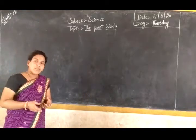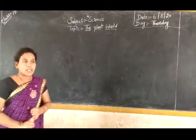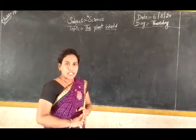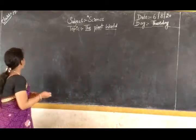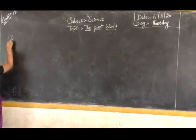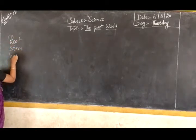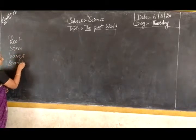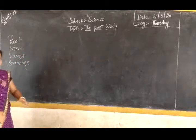Students, recall the different parts of a plant. The different parts of a plant are: root, stem, leaves, and branches. These are all the different parts of the plant.